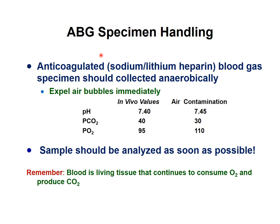Blood gas specimen handling must be done very carefully. Sodium or lithium heparin is used as the anticoagulant. The blood should be collected anaerobically, meaning no air bubbles inside, because air has different PCO2 and PO2 values and contaminated samples produce completely different results. The sample should be analyzed as soon as possible because red blood cells consume oxygen and produce carbon dioxide, so waiting longer gives completely inappropriate values.